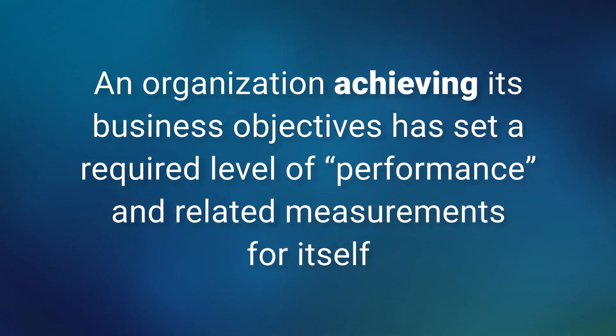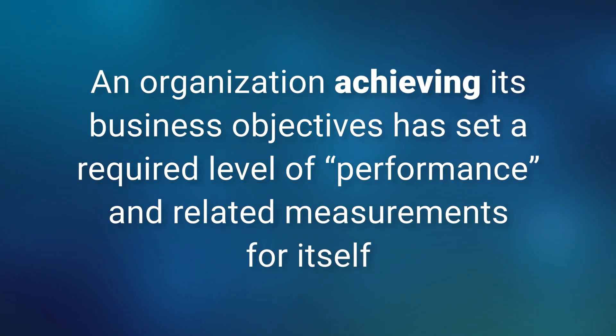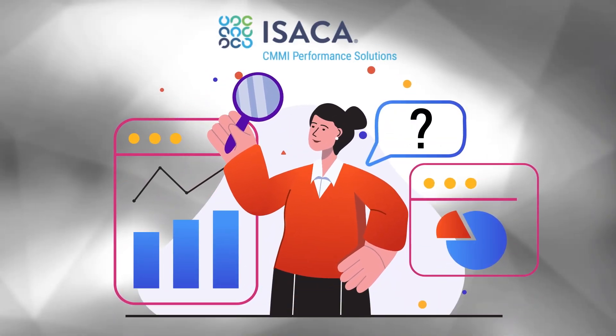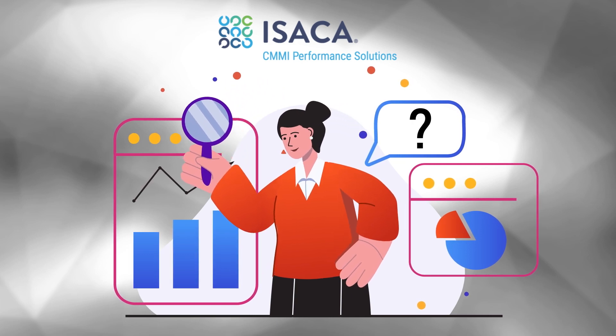So what does it mean to have consistency between the appraisal results and the performance report? In general, an organization that is achieving its business objectives has set a required level of performance and related measurements for itself. Of course, this level of performance may not be satisfactory to compete effectively in the market. In that case, we would expect organizations to attempt to change the level of performance by instituting a performance improvement program. This is often where the CMMI model can be used to help organizations diagnose the causes of the current level of capability and performance and help shape appropriate improvement solutions.